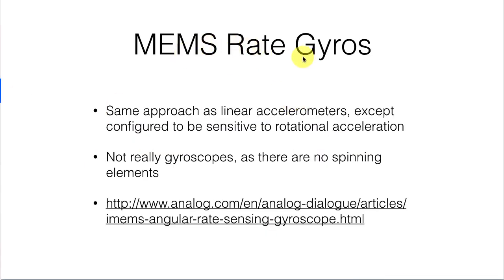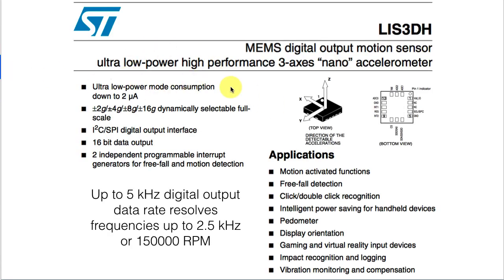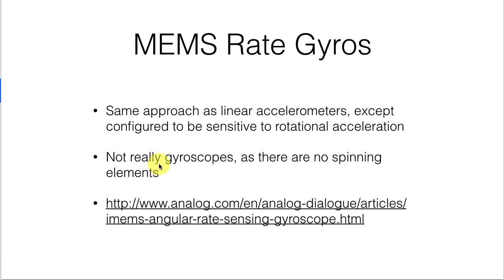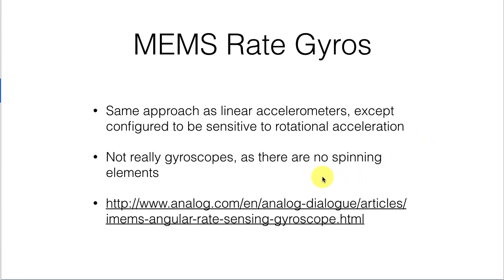Instead of making an accelerometer like this one, which senses linear accelerations, we could make a rotational accelerometer that would sense rotational accelerations. These are typically referred to as rate gyros. They're really not gyroscopes because there aren't rotating elements in them, but they are detecting the rate of rotation in a particular direction. And if you combine a rate gyro with an accelerometer, you're getting considerably more information — you've got six degrees of freedom information about how these things are moving.